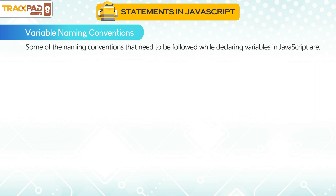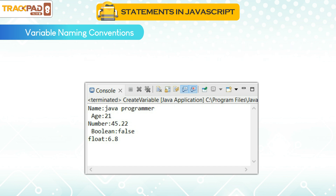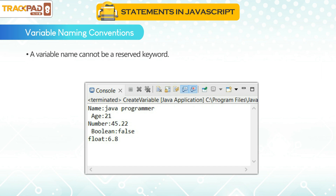Some of the naming conventions to follow while declaring variables in JavaScript are: variable names are case sensitive, which means the variable name 'Age' (uppercase) is different from 'age' (lowercase). A variable name must not start with digits 0 to 9. Variable names can contain letters, digits, or the symbols dollar sign and underscore. A variable name cannot be a reserved keyword.